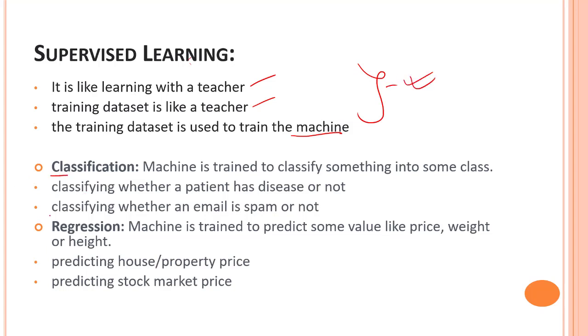There are two things: classification and regression. Now let's look into some of the real world applications of classification. Classification is trained to classify something into some class, as we have seen with cats and dogs. If you could recall cats and dogs, that was a classifier.